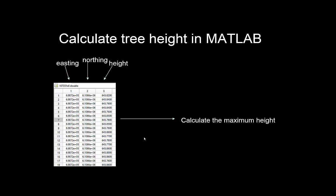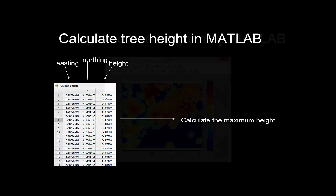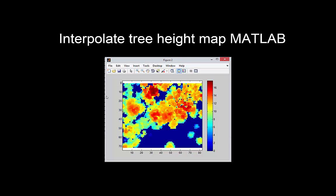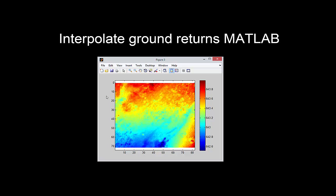One thing to point out is that when you see the three columns in MATLAB, you'll realize that these are easting, northing, and height above sea level. You can use that in MATLAB and interpolate it into maps like this — as well as interpolating the ground surface into a map.